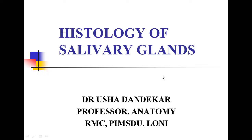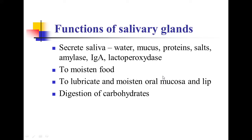Salivary glands are accessory glands of secretion and they pour their secretion, that is the saliva, into the oral cavity. The salivary glands secrete saliva which contains water, mucus, protein, salt, amylase, immunoglobulin A, and lactoperoxidase. These secretions moisten the food, lubricate and moisten the oral mucosa and lip, and help in the digestion of carbohydrates.